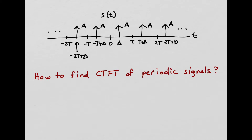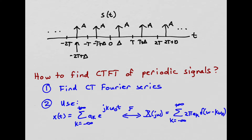So how do we find the continuous time Fourier transform of a periodic signal? It's a two-step process. The first step is finding a continuous time Fourier series representation for the signal. Then we use this general relationship where we take the Fourier series representation for a generic signal X — an infinite weighted sum of complex exponentials — and that maps over to an infinite sum of delta functions, one for each complex exponential, scaled by 2π a_k, where a_k are the Fourier series coefficients.